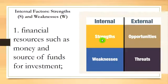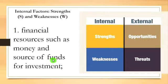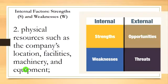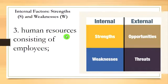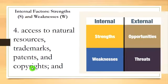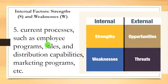The internal factors of SWOT analysis are strengths and weaknesses. These are the resources and experiences readily available to the business. These factors include: first, financial resources such as money and sources of funds for investment; second, physical resources such as the company's location, facilities, machinery, and equipment; third, human resources consisting of employees.